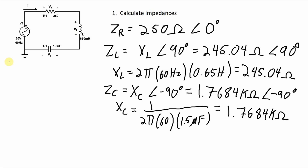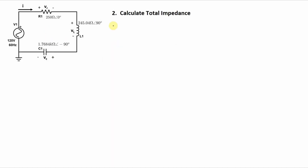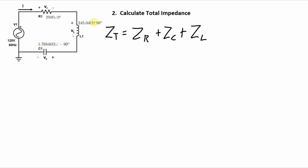We can put all of those values into our diagram. The second step is to calculate the total impedance, which is the impedance of the resistor plus the impedance of the capacitor plus the impedance of the inductor, all added together because they are in series. The values are in polar coordinates, and it's much easier to add when they're in rectangular coordinates. Fortunately, it's very easy to convert from polar to rectangular coordinates for each one of these individual components.